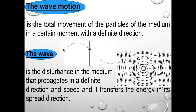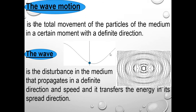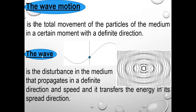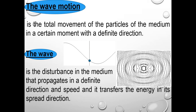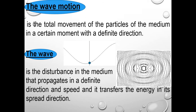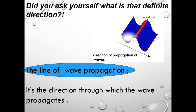When we look at this pole moving up and down, the total movement of all particles in this medium is transferred or spreads in a definite direction. So the wave is the disturbance in the medium which propagates in a definite direction and speed, and it transfers energy in its direction of propagation, as we saw with the stone and coin examples.